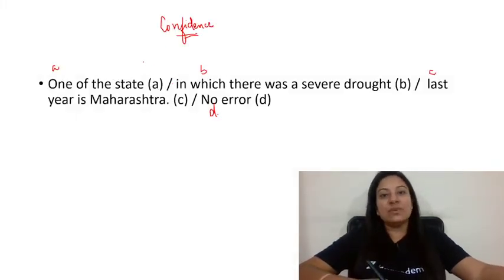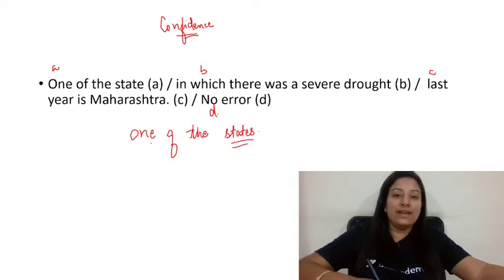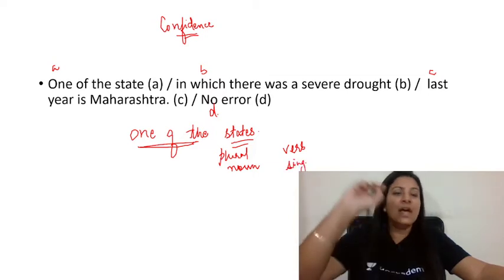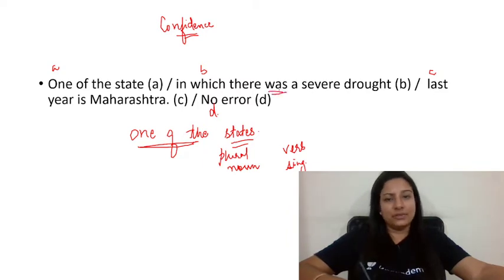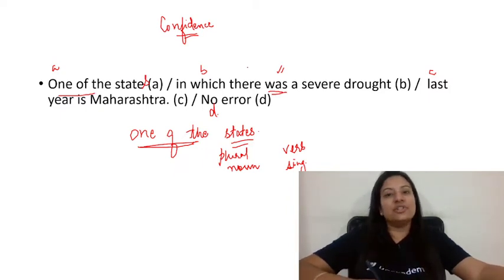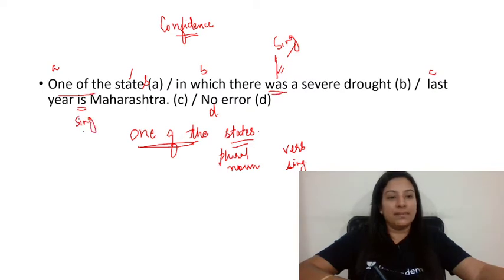Question 3: 'One of the state in which there was a severe drought last year is Maharashtra.' The rule is: after 'one of the', the noun must be plural. Also, the verb that follows it should be singular. Here 'state' should be 'states' — one of the states. I have taught this rule many times, but many students may still find it new. So the correction is: 'One of the states in which there was a severe drought last year is Maharashtra.'